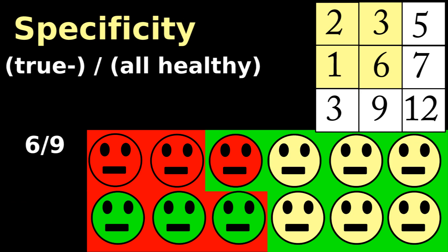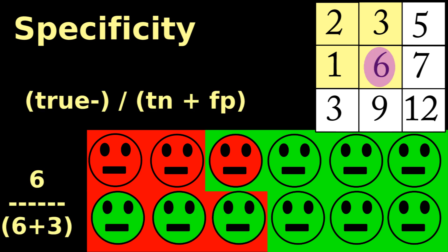Specificity is true negatives divided by all healthy people, including those that test misidentified as sick. Or, true negatives divided by true negatives plus false positives.